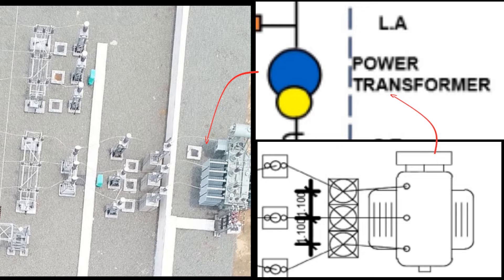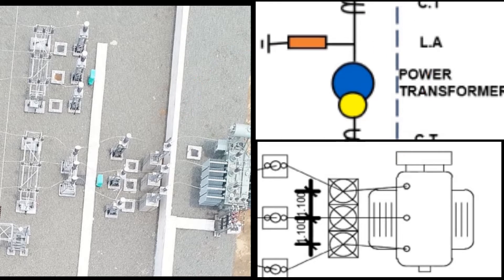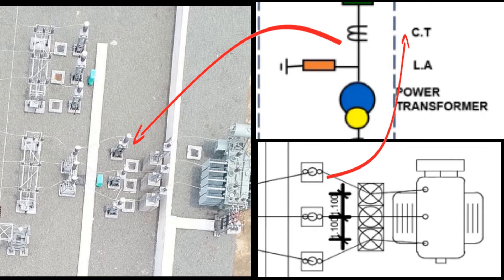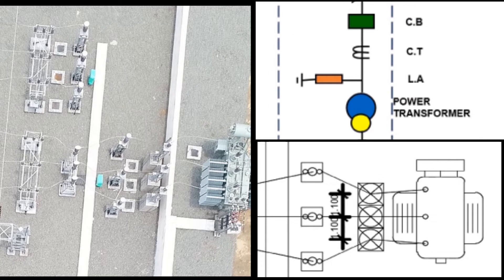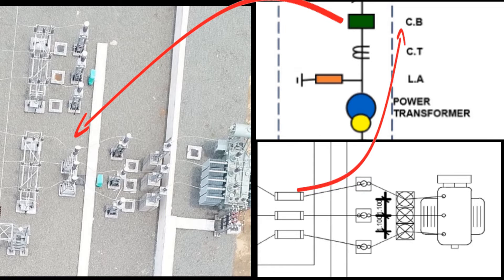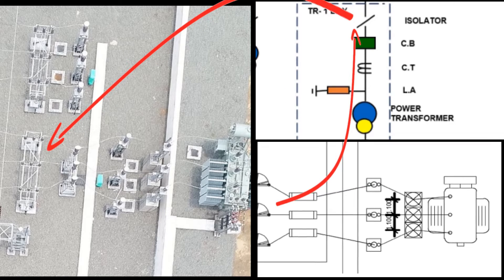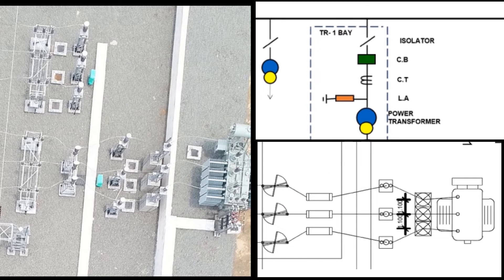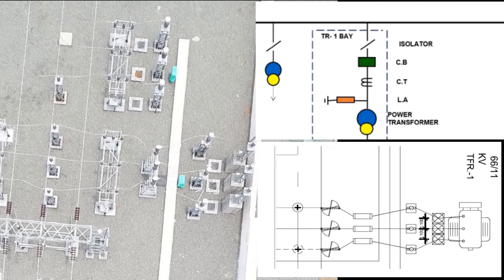Here one can see a side-by-side comparison of the power transformer and LA, then the CT, after that the circuit breaker, followed by the isolator, then the bus — which can be of any class — and at last is the PT bay, which you can see here.